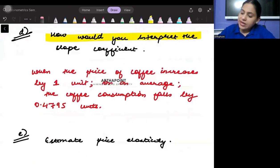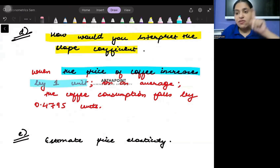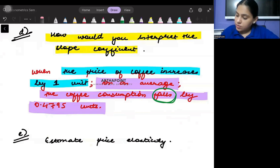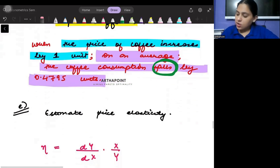Then the next question says: how would you interpret the slope coefficient? Very simple. When the price of coffee increases by one unit, then on average, the coffee consumption falls by 0.4795 units. Falls, because of the negative sign, I am writing the word 'falls'.